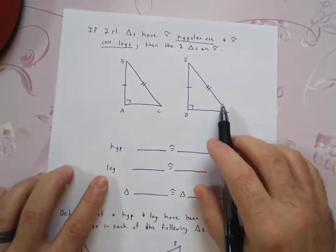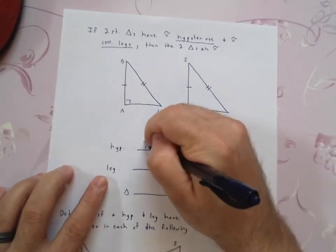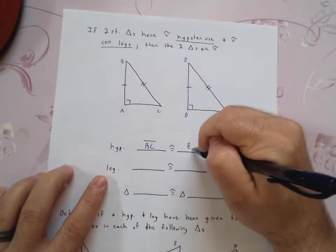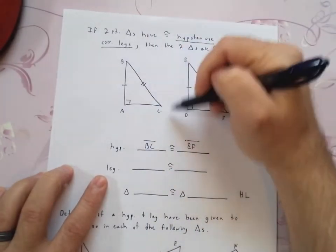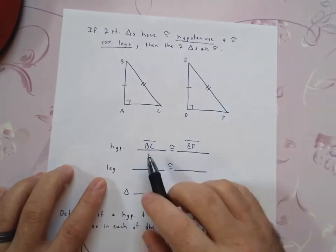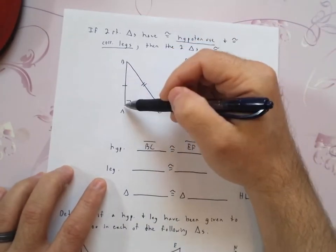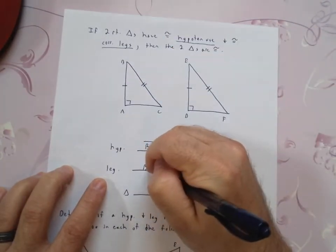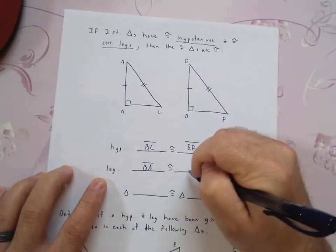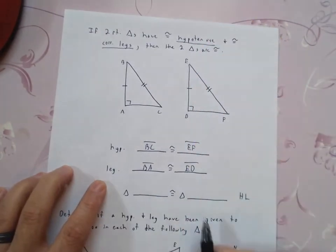well that's segment BC and segment EF. That's my hypotenuse. The leg that we have congruent is segment BA and segment ED.